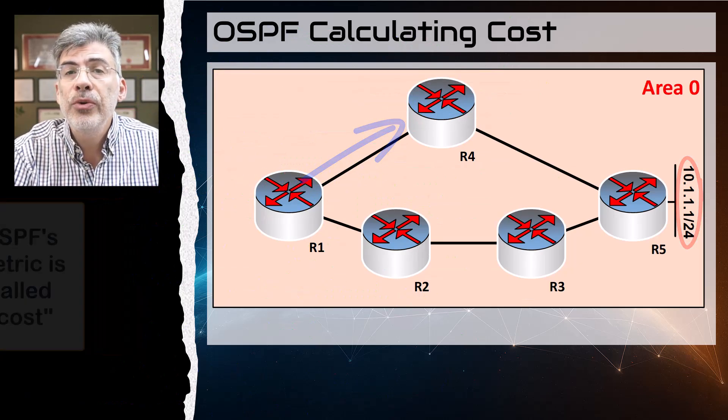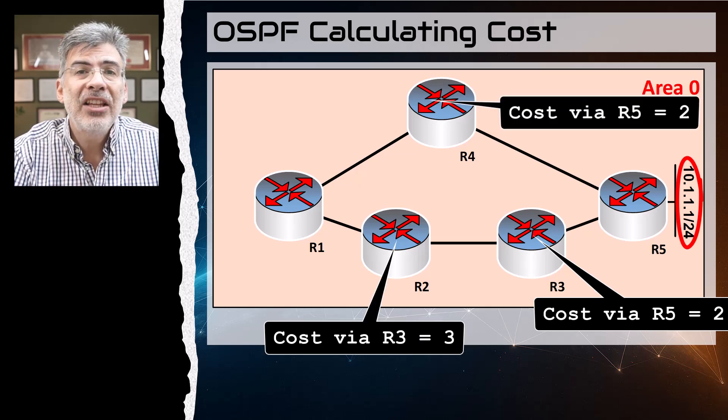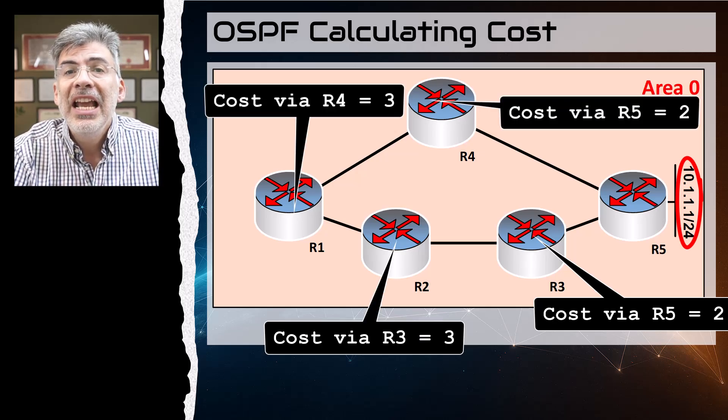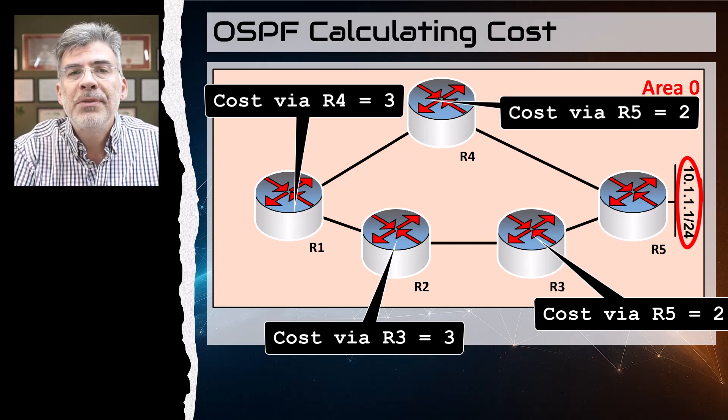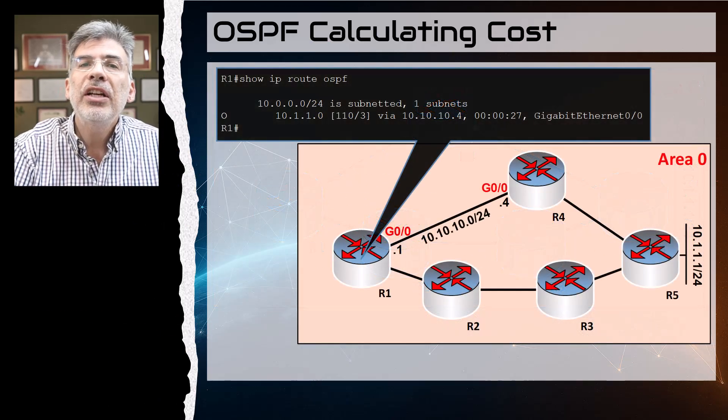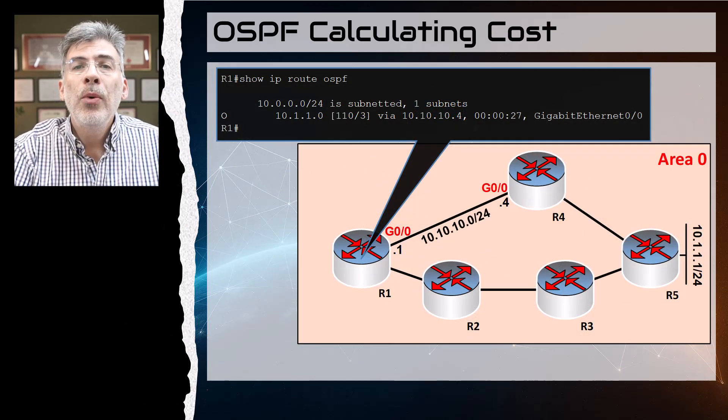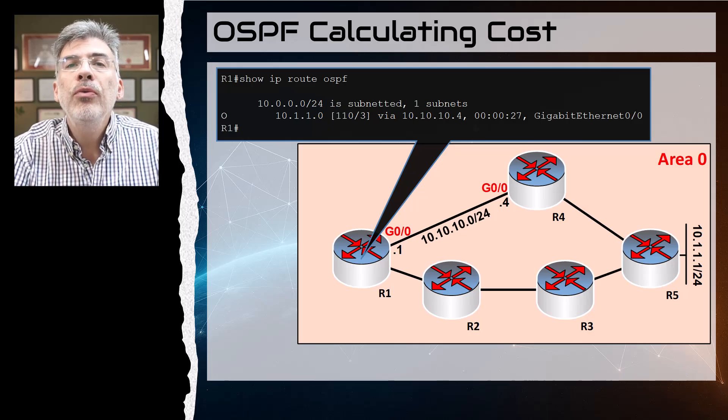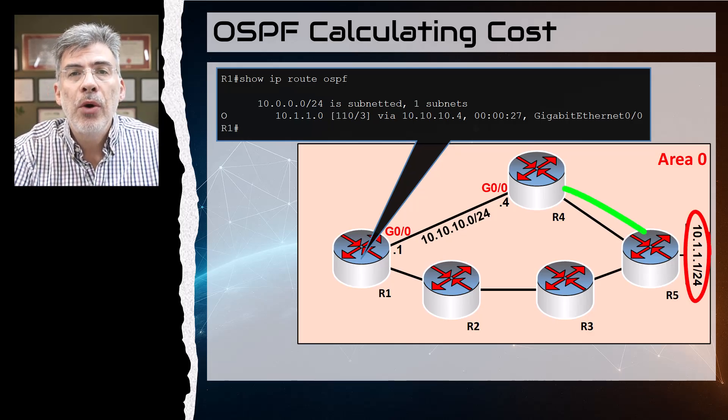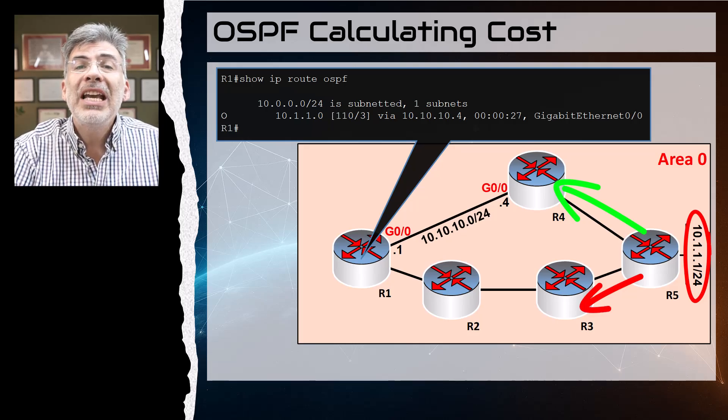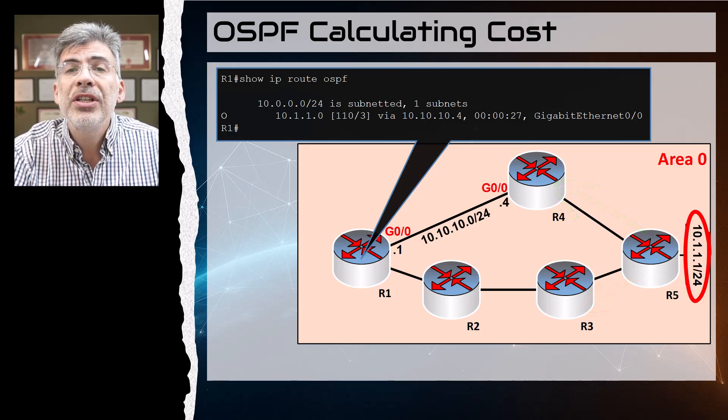It only makes sense that the cost to a particular destination is different from the point of view of each OSPF router. Take a look at this topology here. OSPF has been configured on all routers and this network here has been advertised using OSPF.